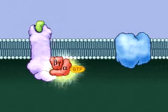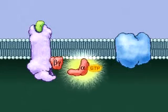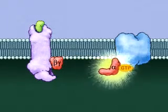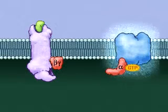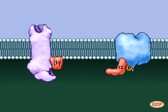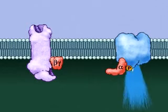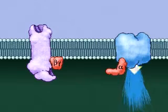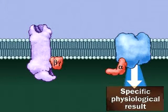Part of the G-protein moves away and activates an effector protein nearby in the membrane. The effector may be an ion channel that opens or closes in response to the G-protein, or it may be an enzyme that the G-protein activates or inactivates. In any case, the effector produces a result inside the cell without the external signal ever having crossed the plasma membrane.